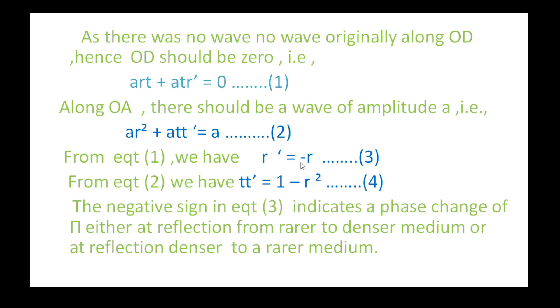So, this is about Change of Phase on Reflection. When does phase change occur? When a ray goes from rarer to denser medium or denser to rarer medium and is reflected, a phase change occurs. We explained this diagrammatically. In the theory part, we get the negative sign, which indicates phase change pi. Thank you, students.